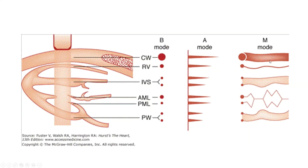The structures seen are: chest wall, right ventricular free wall, right ventricular cavity, interventricular septum, left ventricular cavity. Here you see the motion of the anterior leaflet of the mitral valve, the motion of the posterior leaflet of the mitral valve, and the posterior wall. The M-mode echocardiogram shows the motion of these structures throughout the cardiac cycle.